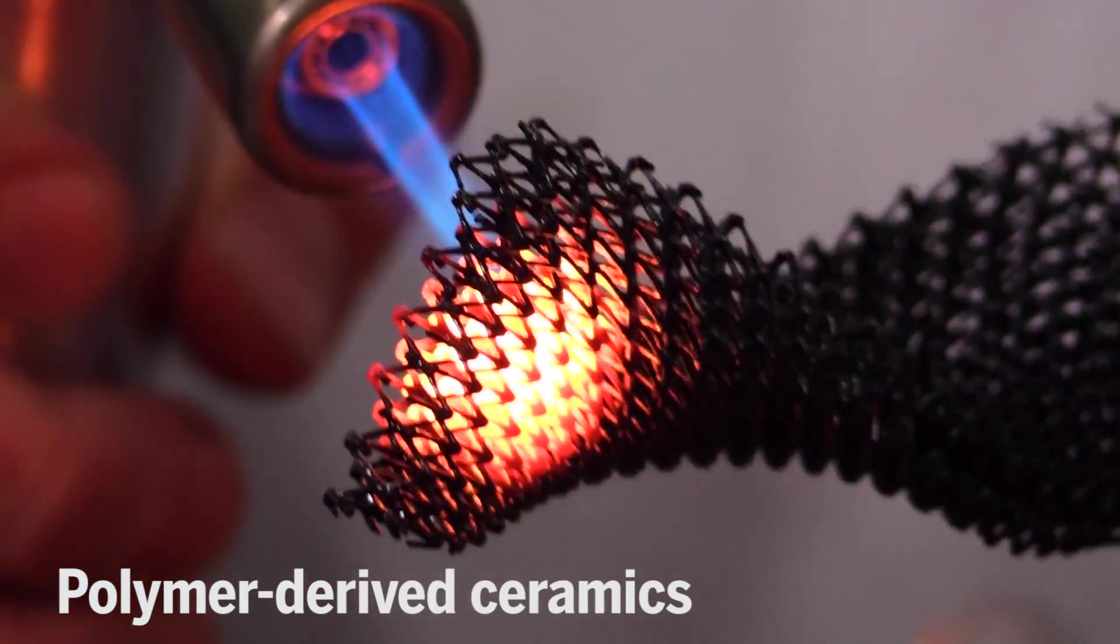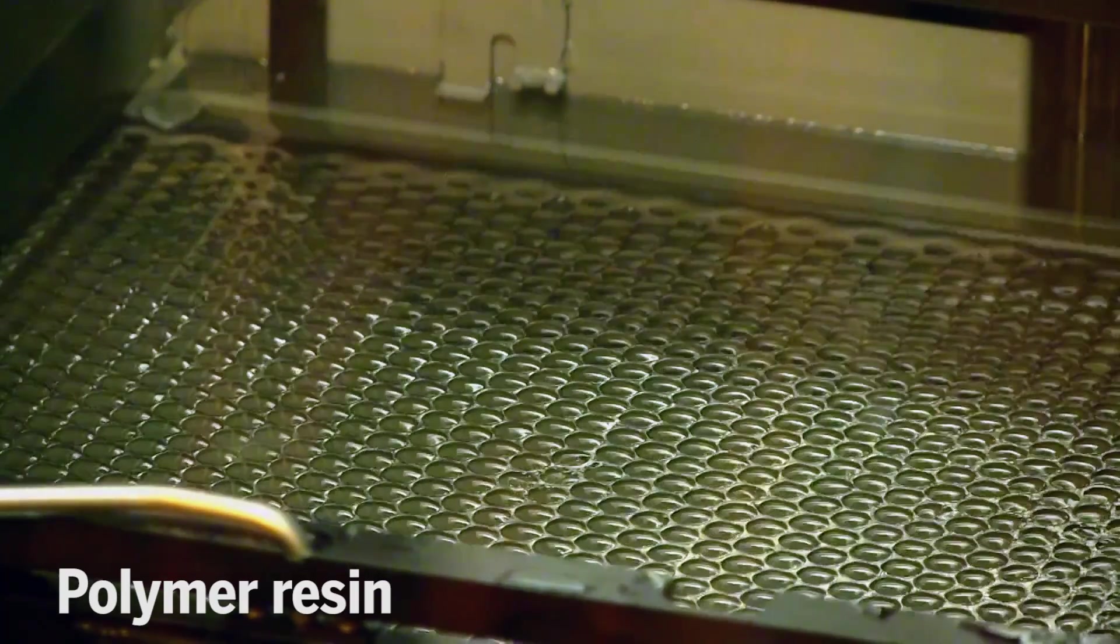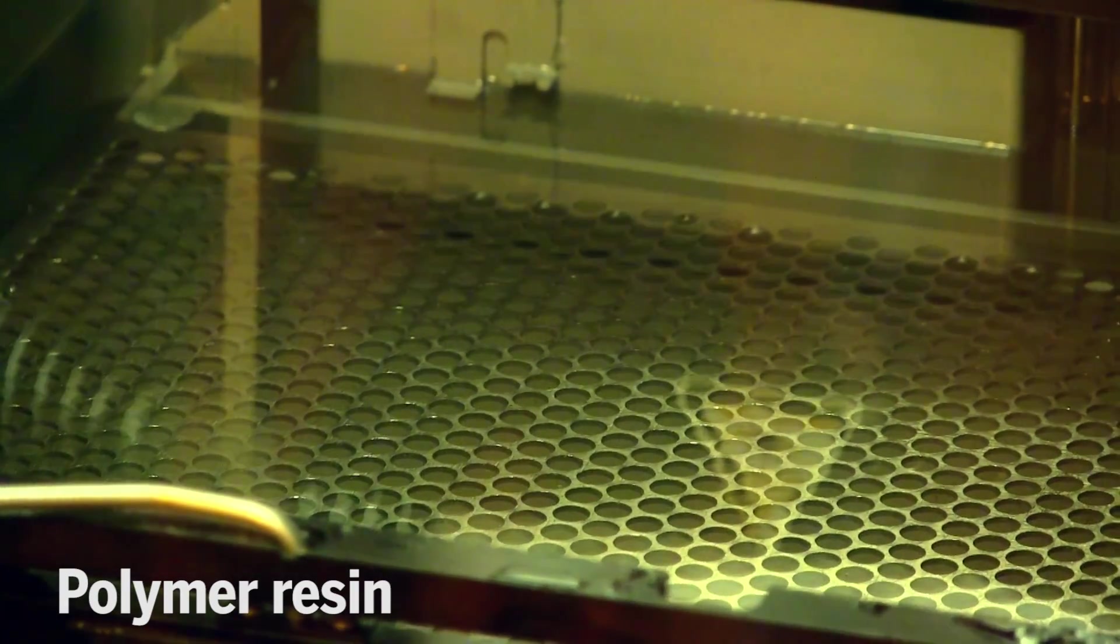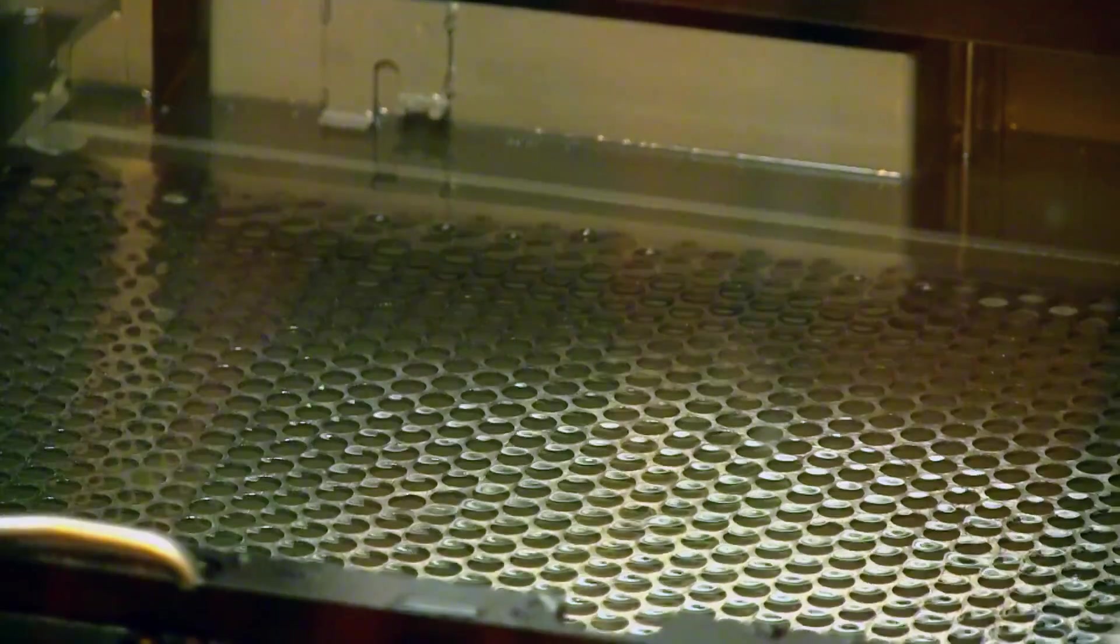Enter polymer-derived ceramics. These materials start out as a polymer and through a heating process are converted into a ceramic. Now we are set for 3D printing.